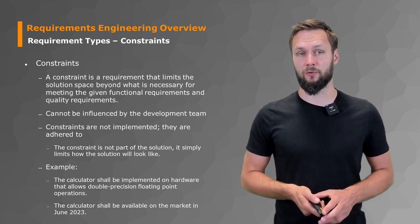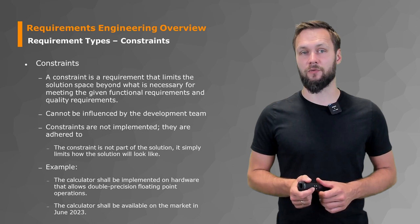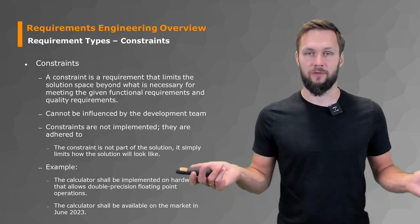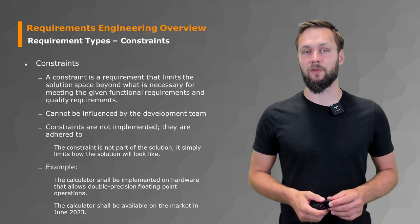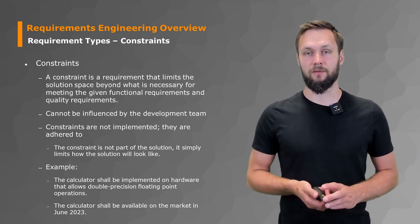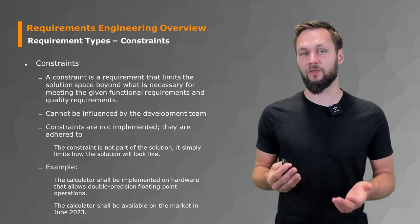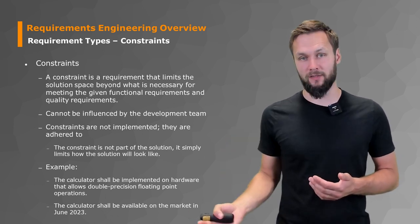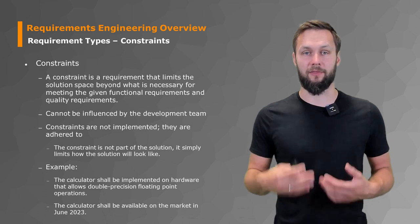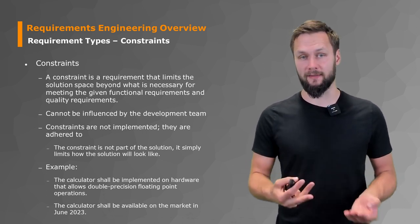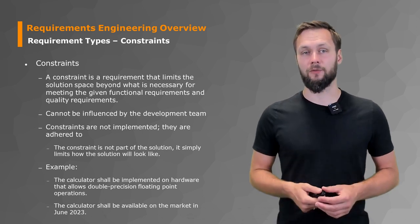What could be an example of a constraint in the context of our calculator? The calculator shall be implemented on hardware that allows double precision floating point operations. This gives you a basic idea of what the hardware underlying your software should look like. Or the calculator should be available on the market in June 2023 - that has been two months ago while recording this, so we're already late. But those constraints could also be imposed by budgets, not just time budgets but also financial budgets, or person-months. How much work power do you have to develop the project? Or legal constraints. There are a lot of those factors.